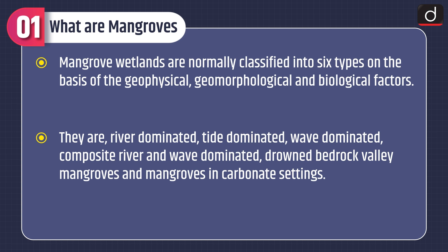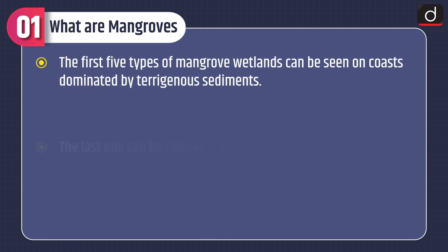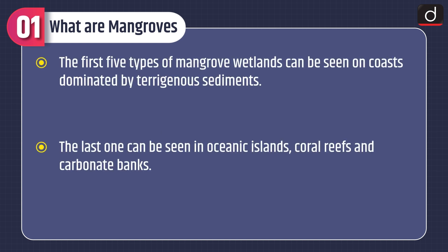The six types are: river-dominated, tide-dominated, wave-dominated, composite river and wave-dominated, drowned bedrock valley mangroves, and mangroves in carbonate settings. The first five types of mangrove wetlands can be seen on coasts dominated by terrigenous sediments. The last one can be seen in oceanic islands, coral reefs and carbonate banks.